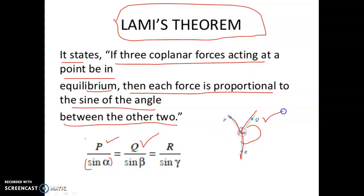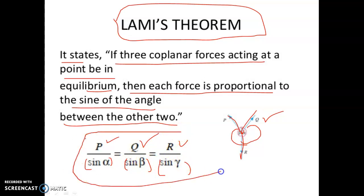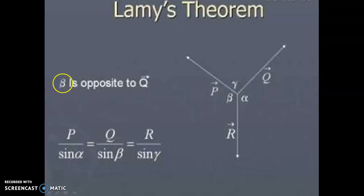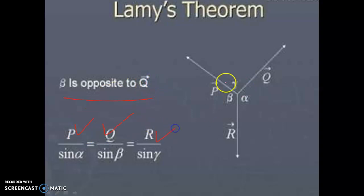For Lamy's theorem: P is opposite to angle alpha, so P divided by sin alpha. Q is opposite to angle beta, so Q divided by sin beta. R is opposite to angle gamma, so R divided by sin gamma. Therefore the formula is: P by sin alpha equals Q by sin beta equals R by sin gamma. It is important to memorize both the statement and the formula for calculations.